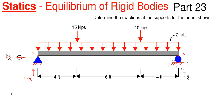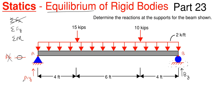So we have two unknowns to solve for. We're going to use equilibrium in order to solve for A sub y and B sub y. You only have three equations of equilibrium for a 2D system: summing forces in the x direction, summing forces in the y direction, and summing moments about a point. We really can't use summing forces in the horizontal direction because we don't have any applied horizontal forces, so we are left with F y and finding moments about a point.